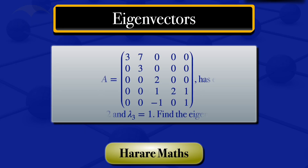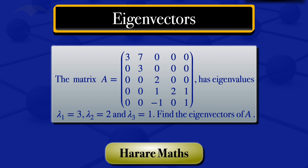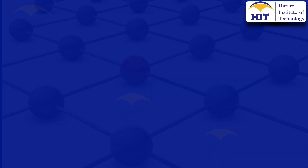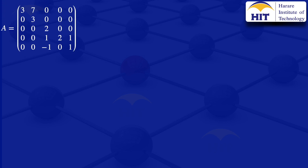In this tutorial we are going to find the eigenvectors of a given matrix when we have been told that the eigenvalues are lambda equals to 3, lambda equals to 2, and lambda equals to 1. We are given those three eigenvalues and for each eigenvalue we are going to find the linearly independent eigenvectors. To find the eigenvectors, we know that an eigenvector is any non-zero vector that satisfies the equation A minus lambda I_n multiplied by x equals the zero vector. In this case we are given a 5 by 5 matrix, so I_n is the 5 by 5 identity matrix with 1s on the diagonal.